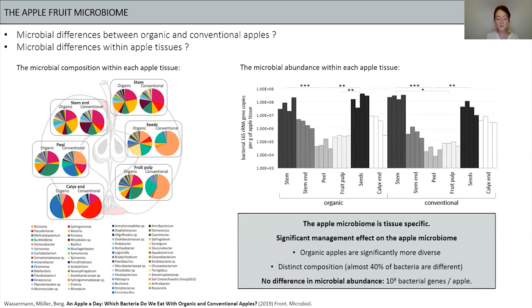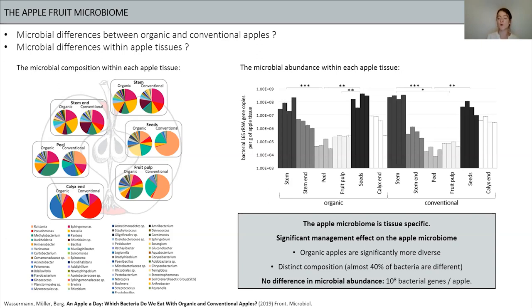To summarize: the apple microbiome is tissue-specific; we see a significant management effect where organic apples are significantly more diverse with almost 40% of bacteria being different compositionally. However, we found no difference between organically and conventionally managed apples regarding bacterial abundance. We calculated that you consume approximately 10 to the power of 8 bacterial genes with one apple, independent of organic or conventional origin. This suggests an apple fruit offers a specific set of niches available for microorganisms, and management practices determine which microorganisms colonize that space.